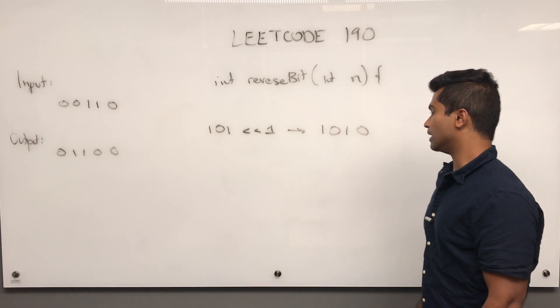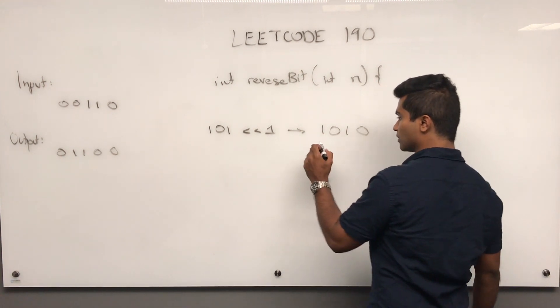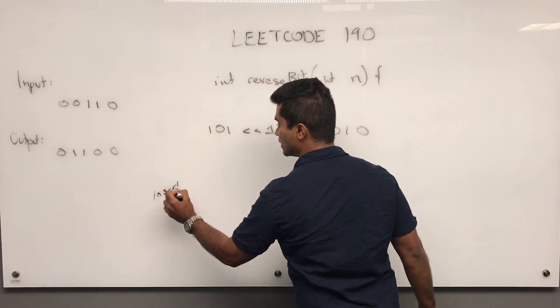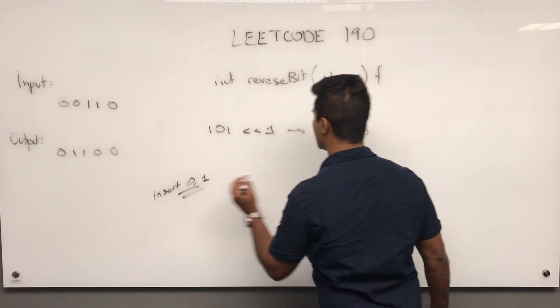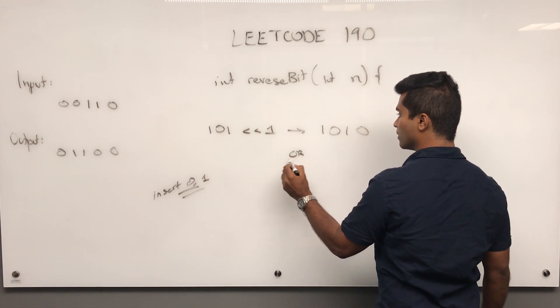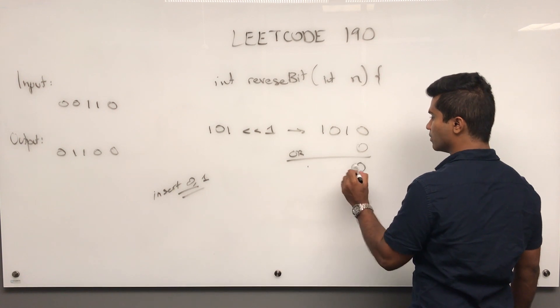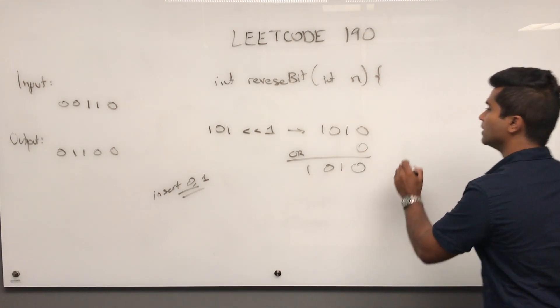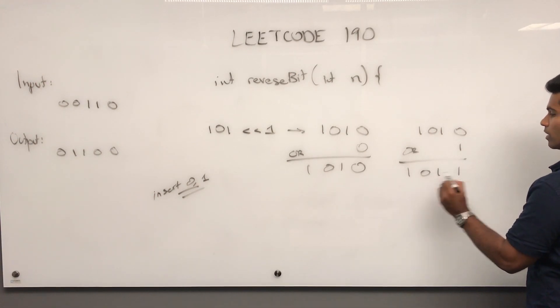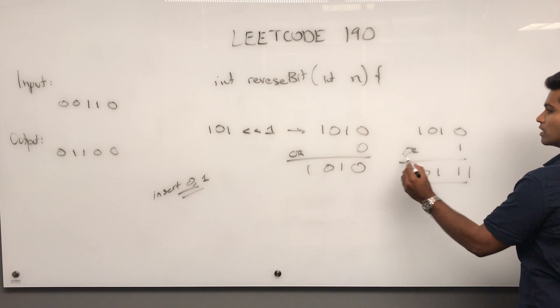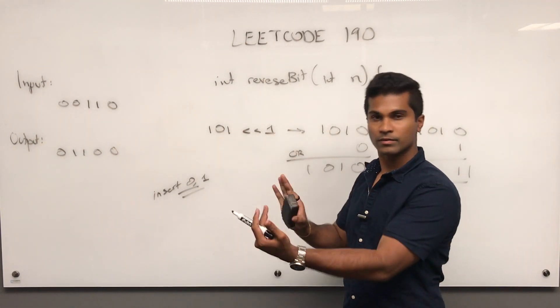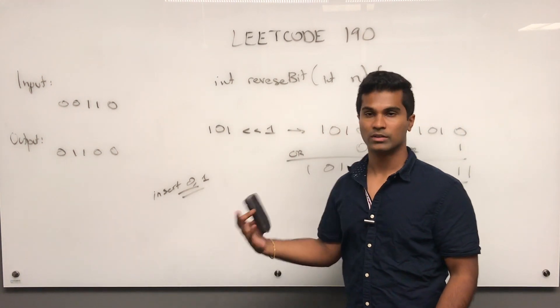How do I insert something here? We can use OR. If I want to insert 0 or 1: if I OR with 0, I get 0, 1, 0, 1. If I have 1, 0, 1, 0 and OR it with 1, I get 1, 0, 1, 1. So I can insert the number I want by first moving the initial number left, then ORing it with what I want to insert.